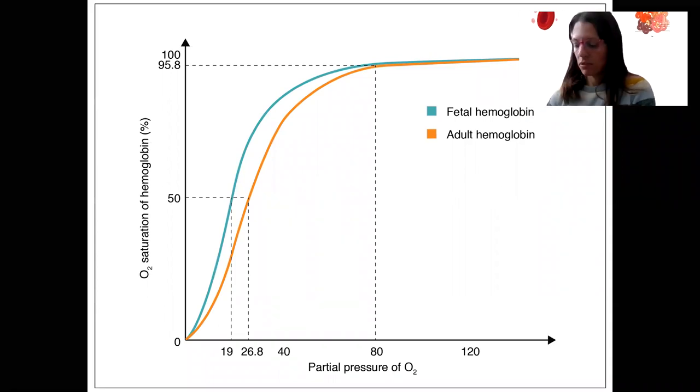What is this showing? Does this make sense? Let's look at it. This is an oxygen-hemoglobin association curve.